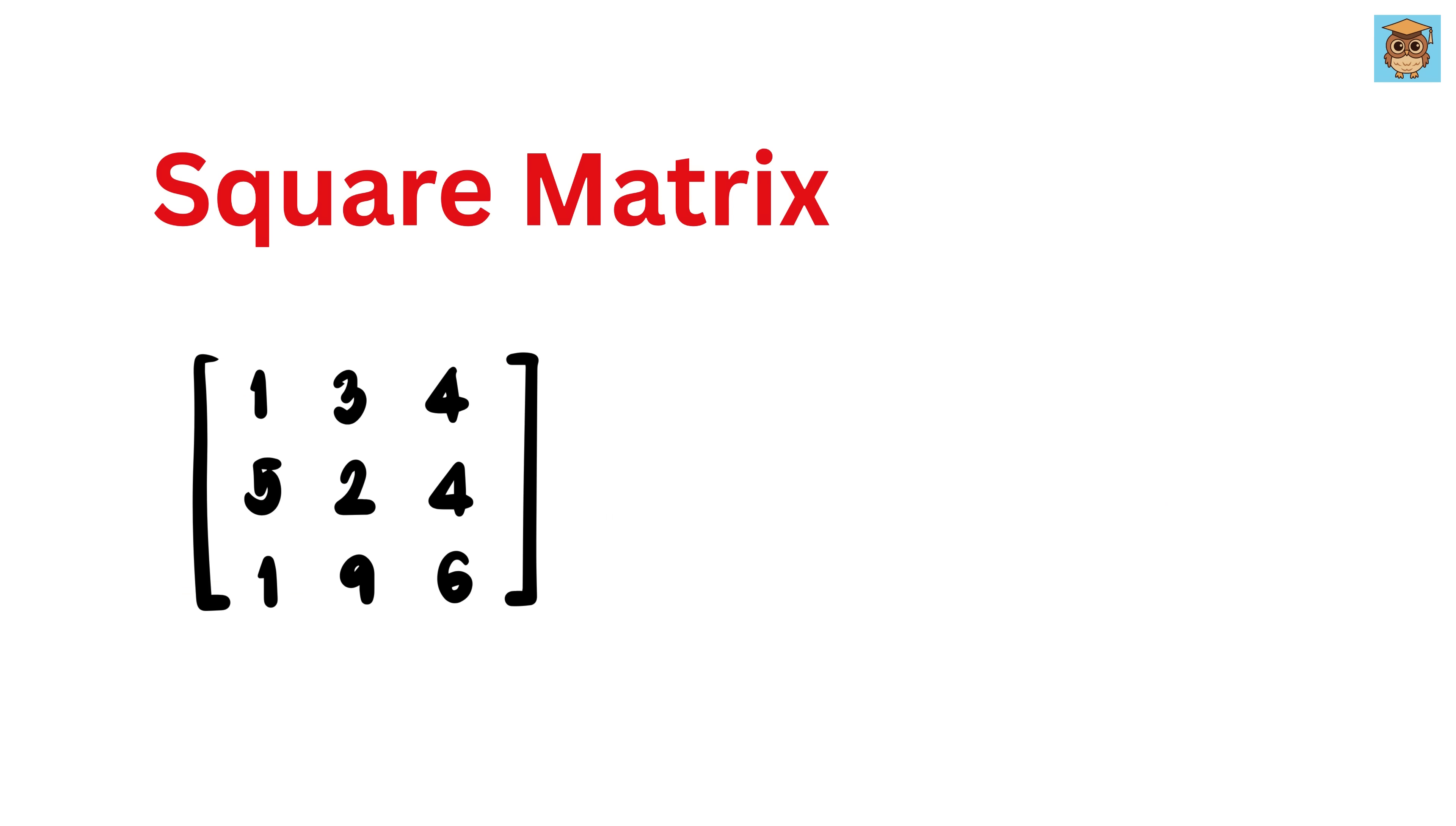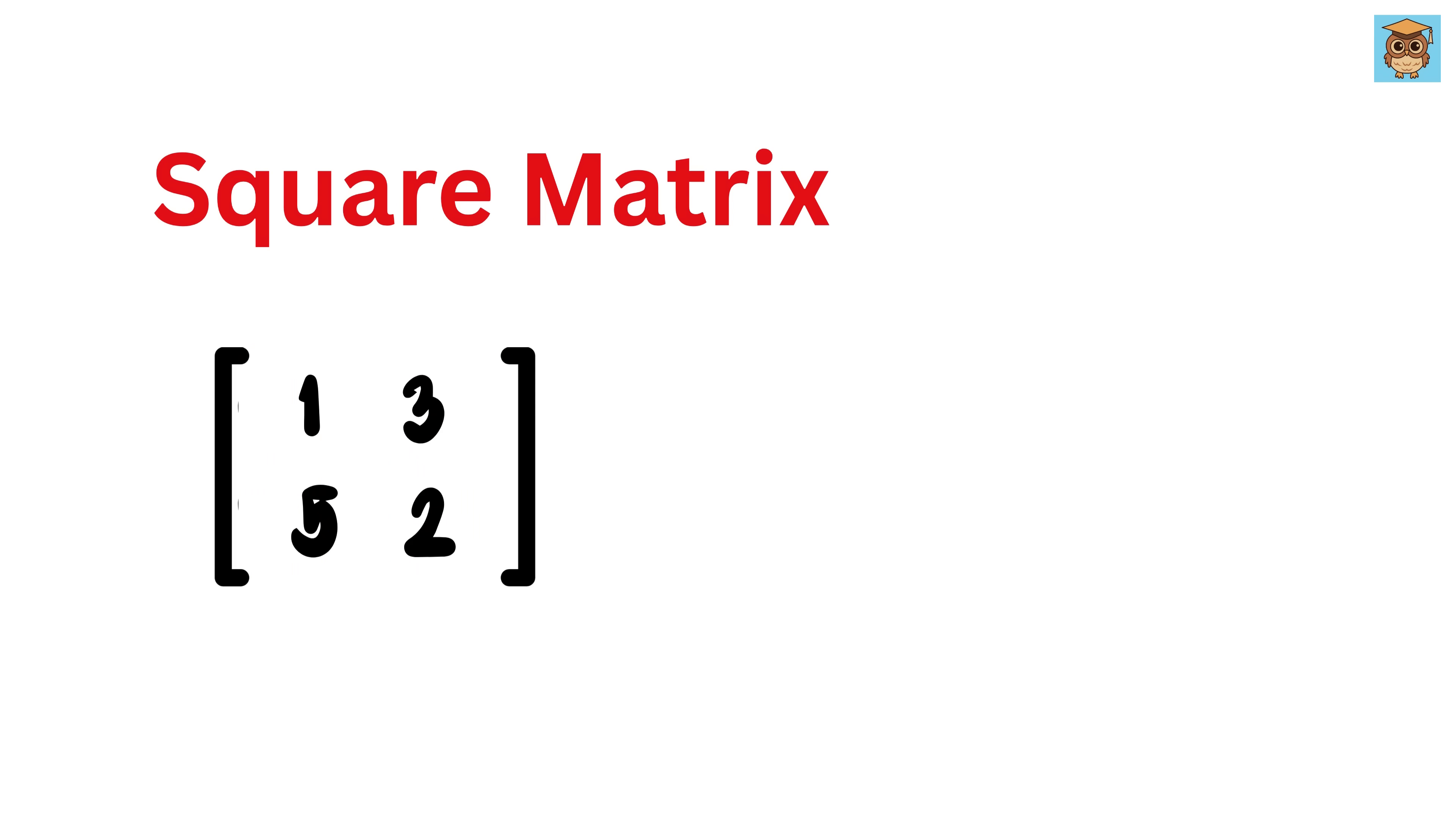A square matrix is a special type of matrix where the number of rows is the same as the number of columns. If a matrix has two rows and two columns, it is a square matrix because it has an equal number of rows and columns.